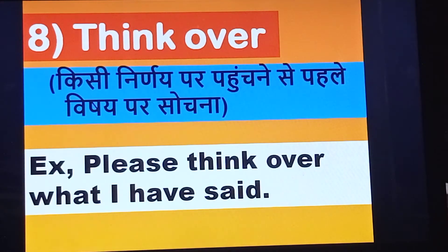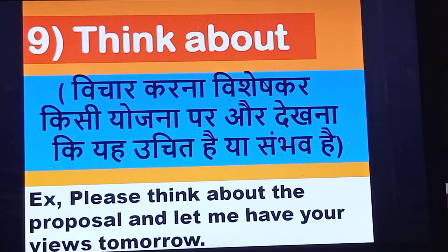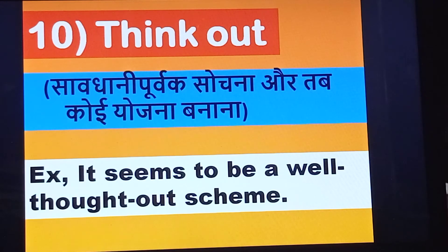Next one is think over. This is the use of think over in a sentence. Next one is think about. This is the use of think about in a sentence. Next one is think out. Think out means to consider thoroughly.